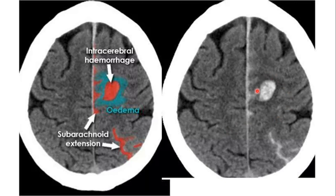There is an intraparenchymal hematoma with surrounding edema causing mild mass effect, extending into the medial aspect of the left cerebral hemisphere with increased density between the sulci. Comparing adjacent sulci, you can see increased density indicating extension into the subarachnoid space, causing subarachnoid hemorrhage. There is subarachnoid bleeding extending along the falx cerebri on the left side and into the overlying cerebral sulci.